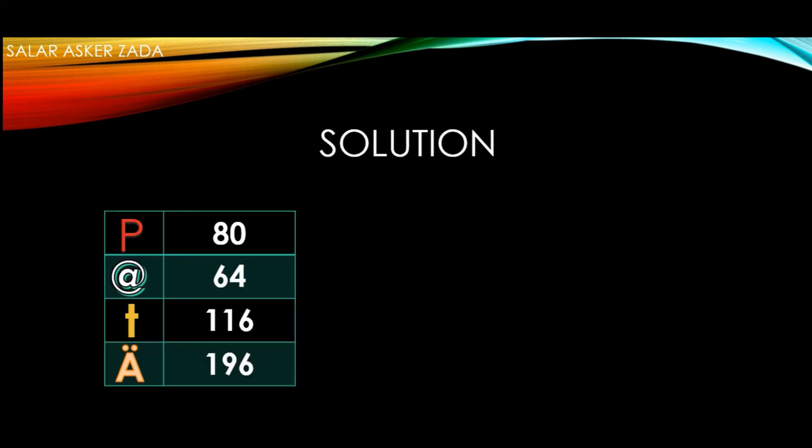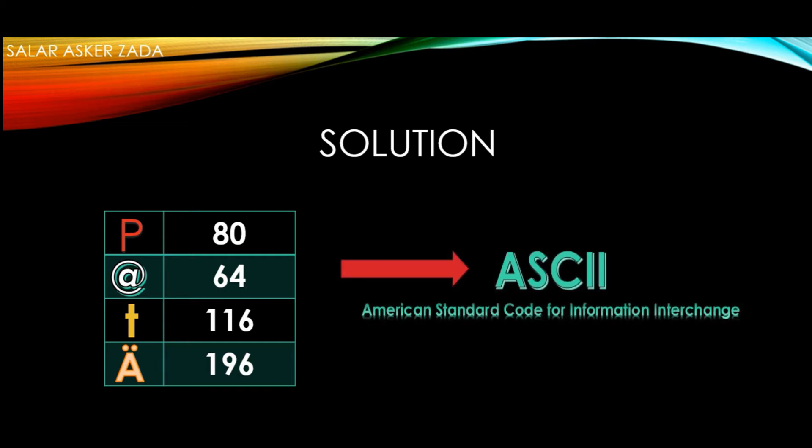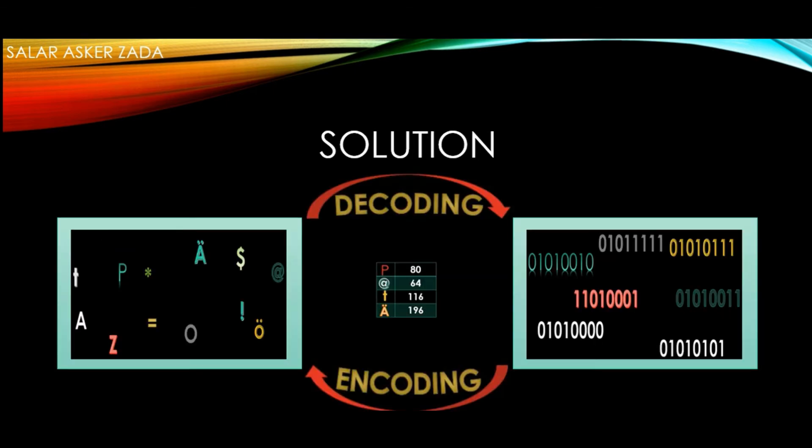Computer scientists came up with a solution. They permanently assigned a decimal number to every symbol and created a table. This table was created in 1960 and became famous as ASCII table. ASCII stands for American Standard Code for Information Interchange. After the creation of ASCII table, things became easier.